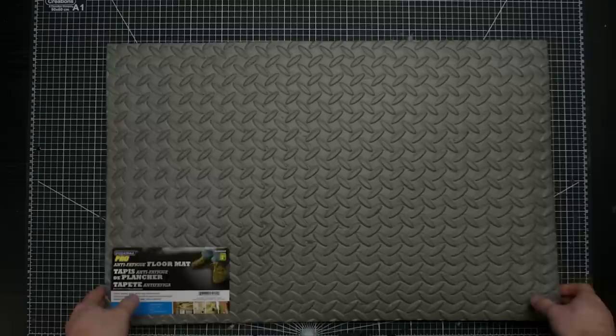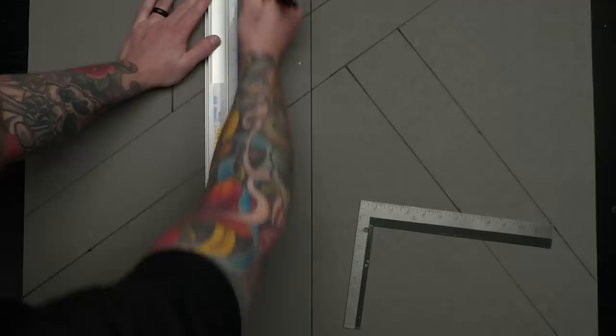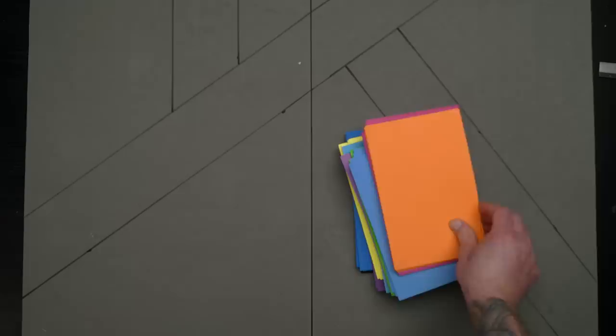So these are just cheap foam floor mats from the dollar store. I took two of them and lined them up and planned out a simple street pattern with a few intersections. Drawing this out would give me a guide for laying out and applying my panel pieces.